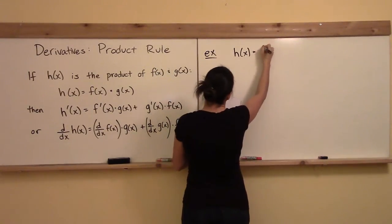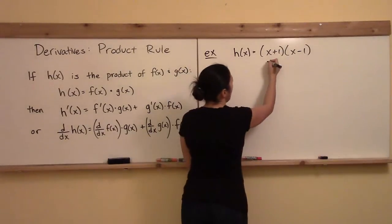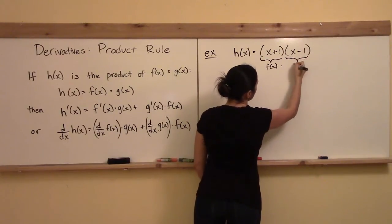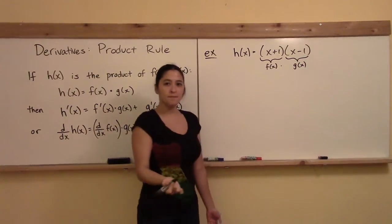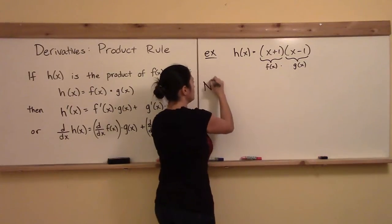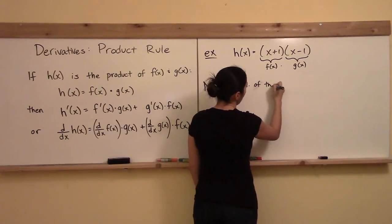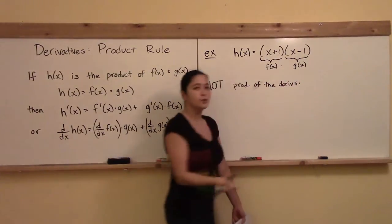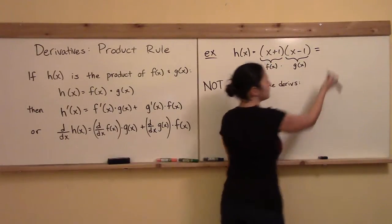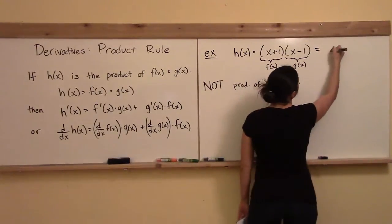Let's form a function h of x as a product of two simple linear functions: x plus 1 times x minus 1. I'll call x plus 1 my first function f of x, and x minus 1 my second function g of x. The derivative of a product is not the product of each derivative. I chose this function to be as simple as possible because, without even using the product rule, I could get the derivative using the power rule with the sum and difference rule.